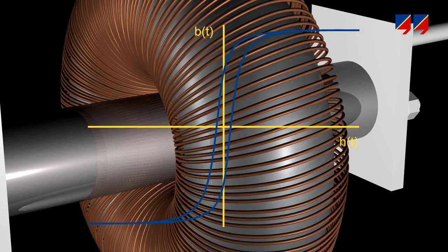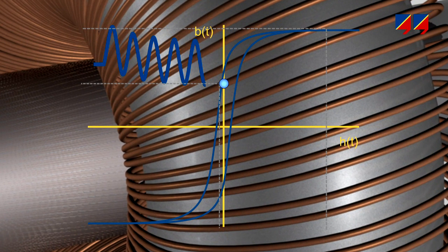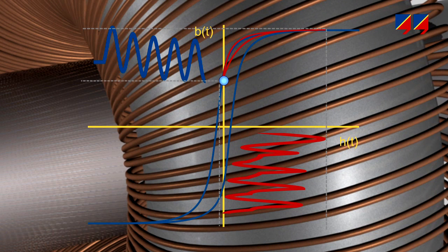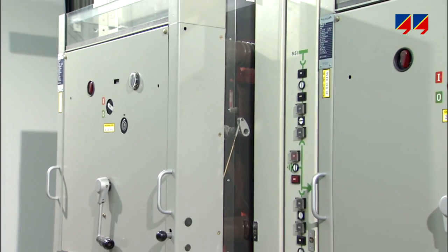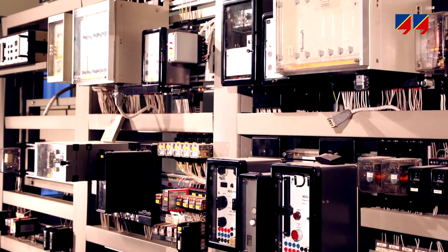During a fault, the accumulated remanence will allow a much lower fault current to saturate the CT. The higher the remanence, the lower the fault current required to drive the CT into saturation, which might subsequently cause a maloperation of the protection system.